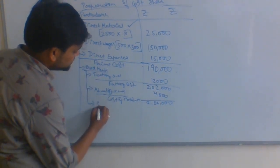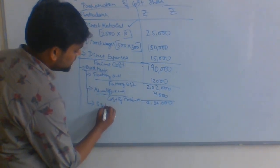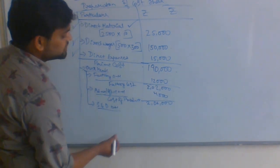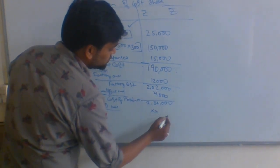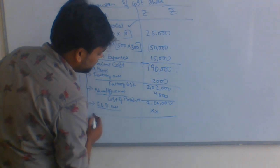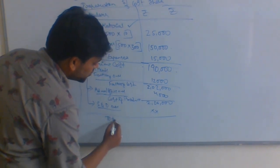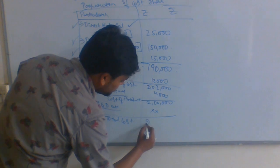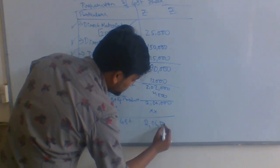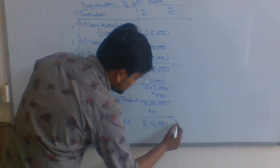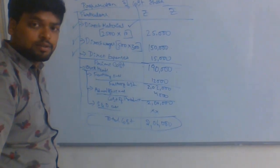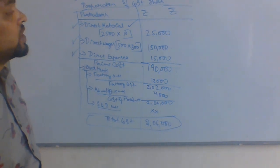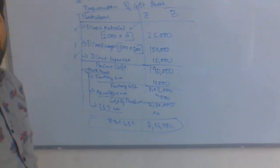The third overhead is selling and distribution overhead. Is there any selling and distribution? No. So our final total cost is 2,06,000.